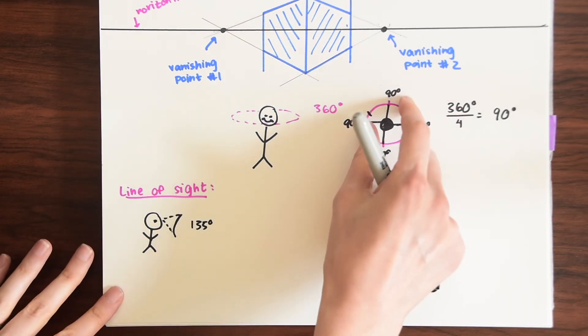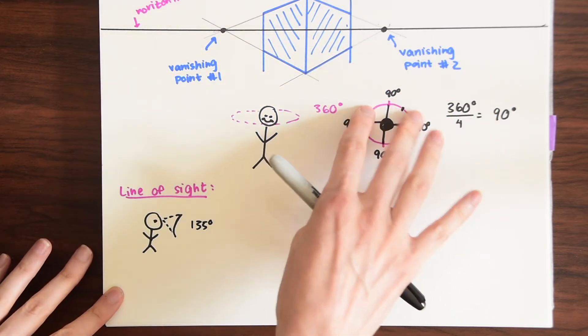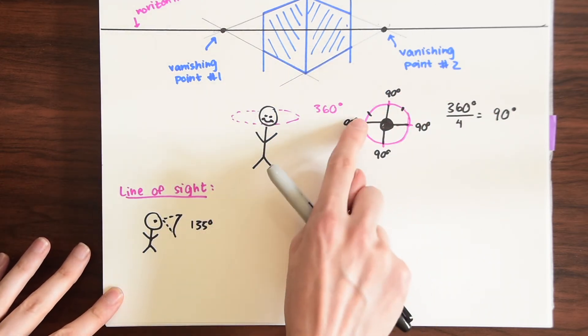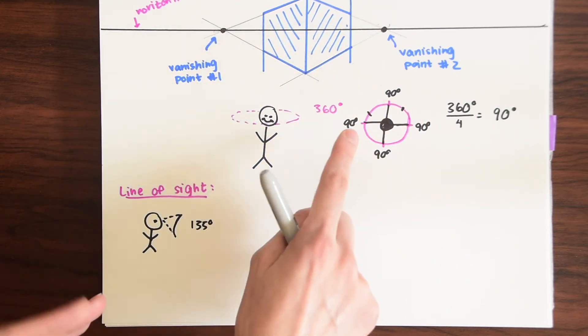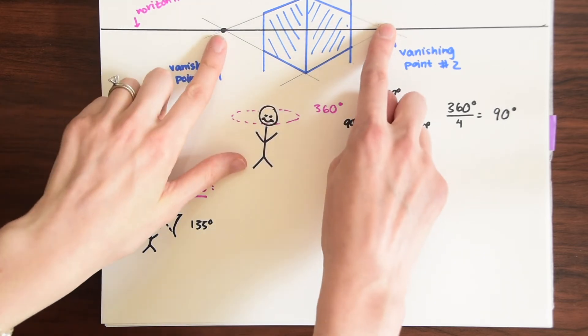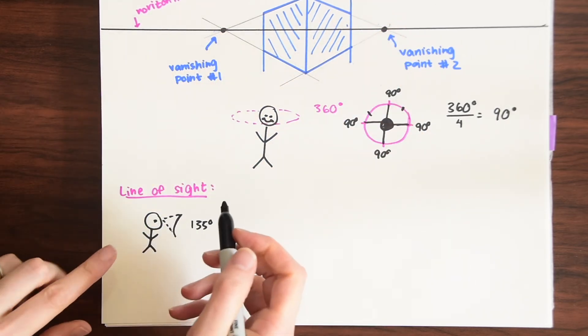That would be one point perspective but at any one time notice we can take 135 degrees and turn it and potentially have two vanishing points and the vanishing points would always be 90 degrees apart. So these vanishing points are always 90 degrees apart. Let's first define line of sight.